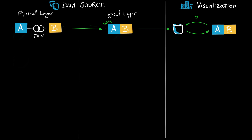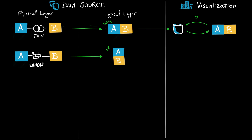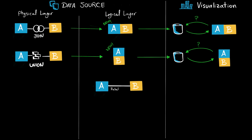The same applies to unions: you create the union at the physical layer from two tables, and it creates a completely new table where the rows of both tables are combined. At the visualization layer, Tableau sends a query to the data source, which retrieves data from the logical layer.